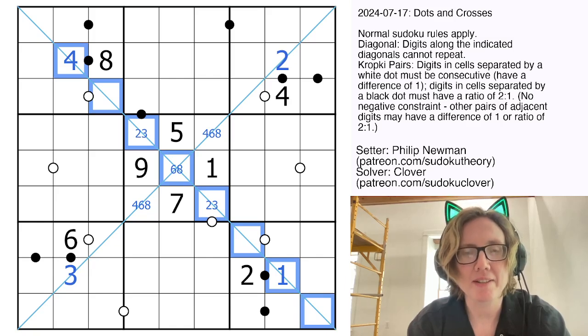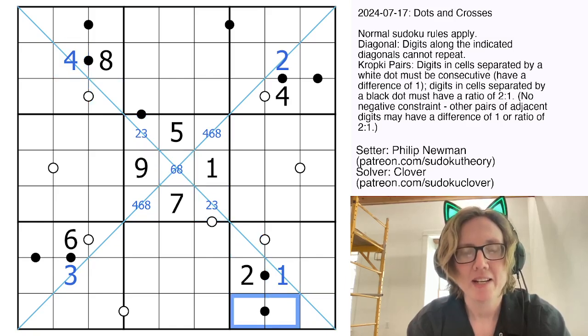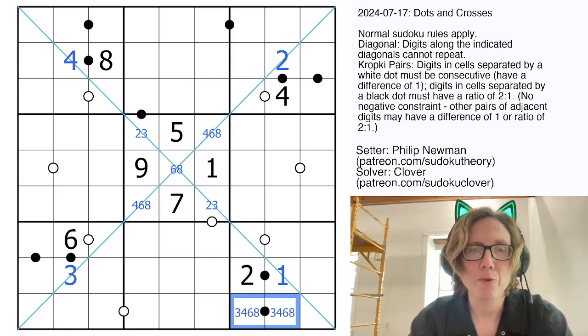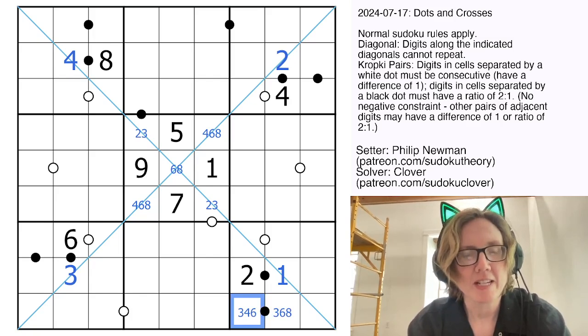I can also eliminate a 4 here because there's a 4 on this negative diagonal. Okay, let's look at some of these other black dots. So I can't use a 1 and I can't use a 2 here, so this needs to be either 3 and 6 or 4 and 8 with the 4 going in the left position.